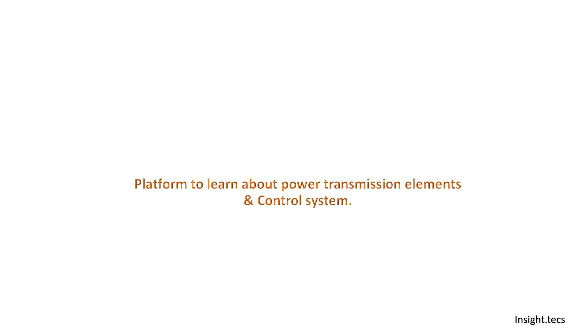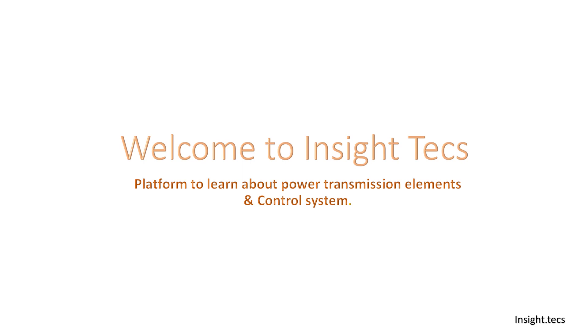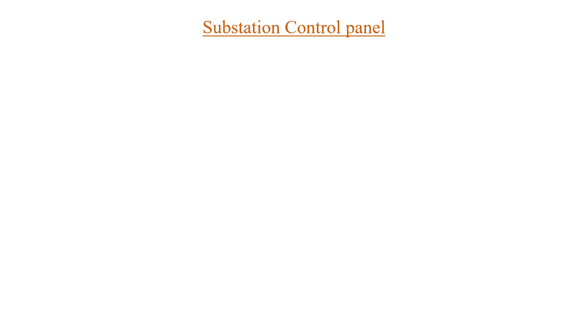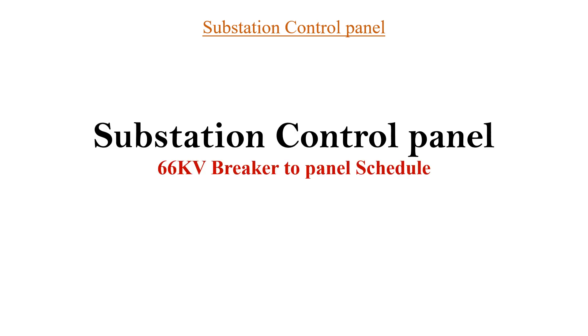Hello friends, welcome to Inside Text. This is a platform to learn about power transmission elements and its control system. Based on demand from you all as seen in our comments, we are going to make today's video about substation control panel — specifically discussing how to prepare a schedule for wiring between a 66 kV circuit breaker in the switchyard to the control panel in the control room.